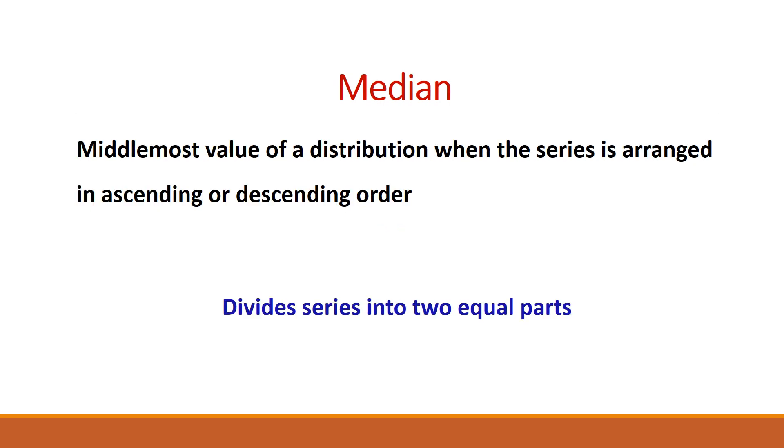Now, the next one is median. It is the middlemost value of a distribution when the series is arranged either in ascending order or in descending order. So, it is that value that divides the series into two equal parts.